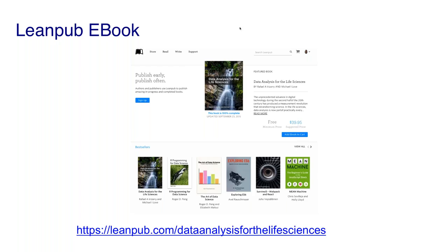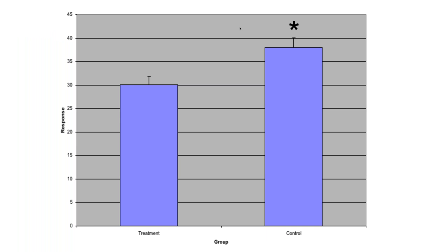I want to go back to the most basic concept in inference. For those that already know this, bear with me — it'll only be about five minutes. Basically, I'm going to explain what the little stars on top of the bar graphs in scientific papers mean — those are put on graphs to relay that a result is statistically significant. I'll go over that and then explain some subtleties about how this has come up in my research.